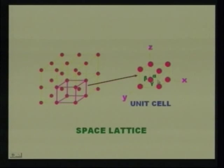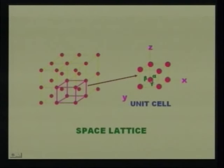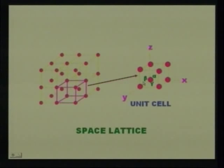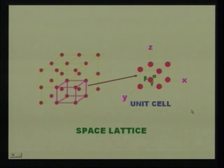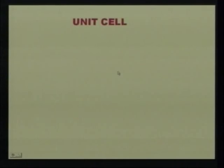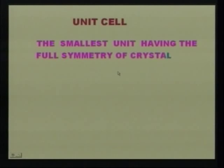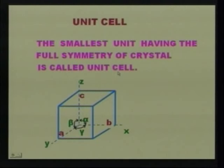In the space lattice, the unit cells are arranged according to the axes and also grow equally according to the axes. The angle between the x and z axis is alpha, the angle between the z and y axis is beta, and the angle between y and x is also alpha. The unit cell is defined as the smallest unit having the full symmetry of a crystal.